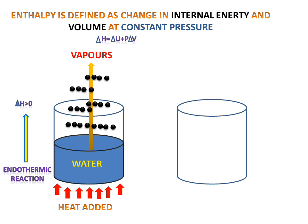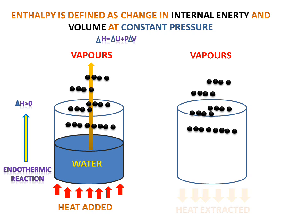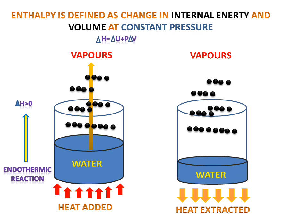The second example is the reverse of the first one. We have a container with vapours. If we extract heat from the vapour, the vapours will convert into water. Vapour is converted into water by heat extraction. This is an exothermic reaction, in which ΔH is less than zero because heat is extracted from the system.